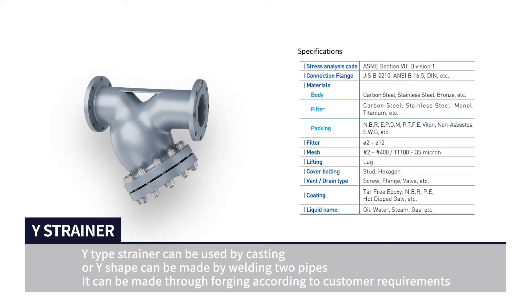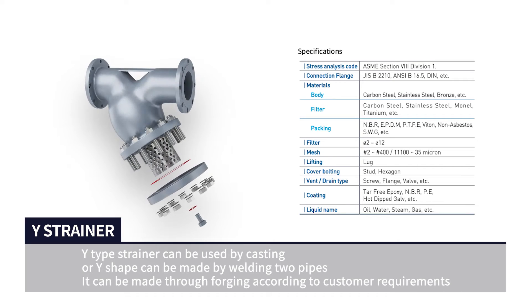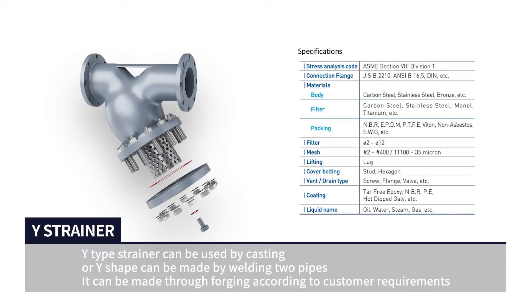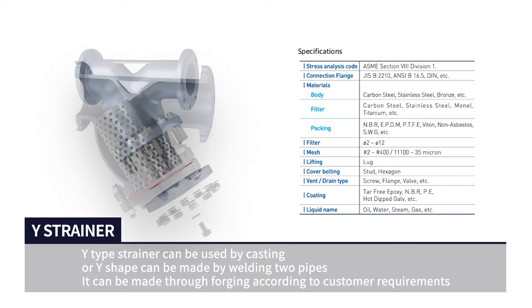Y-type strainer can be used by casting, or Y-shape can be made by welding two pipes. It can be made through forging according to customer requirements.